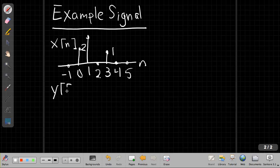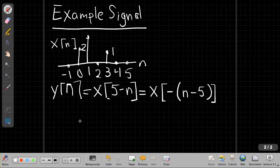So y[n], like we just had, is x[5-n]. Okay, so as we just saw, we can factor this and then interpret it from the outside in, in terms of what happens to the time operation. So it says we flip it and then delay it by five.